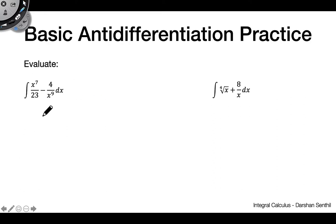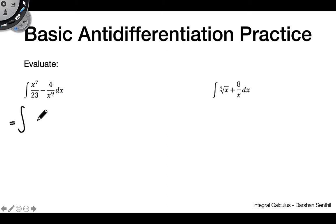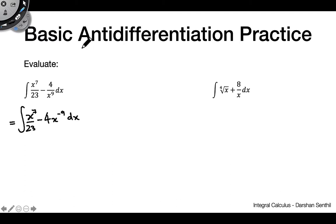So let's go ahead and get started with our first examples. This first one is x^7/23 minus 4/x^9. This is an inverse power rule problem, but you might be a little confused about how to use the power rule on that 4/x^9 term. If we take advantage of our properties of exponents, we can rewrite that as 4x^(−9), which is something much more amenable to the inverse power rule.